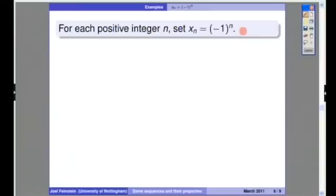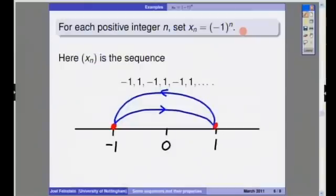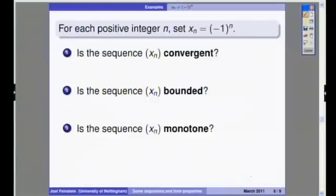Let's look at the sequence where xn is minus one to the n. This time the sequence doesn't do very much, it just oscillates backwards and forwards between minus one and one, with the first term being minus one. So if I was to show you what this sequence did on the number line, I'd just be going backwards and forwards between minus one and one. It's certainly not convergent. So is the sequence convergent? No. And any sequence that is not convergent is divergent. Even though it doesn't head off to either infinity, it's still divergent.